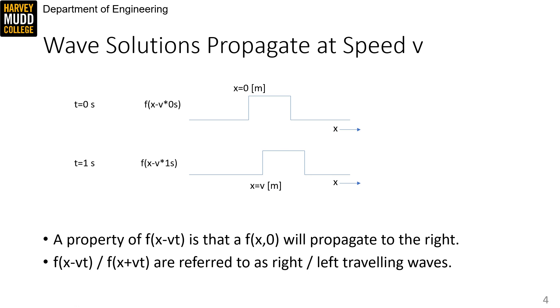So the vt term causes solutions to propagate to the right at a speed of v. This is backwards for the f of x plus vt solution. Adding vt causes the initial function to propagate left. So because of this, the two candidate solutions are often called the left and right traveling waves.